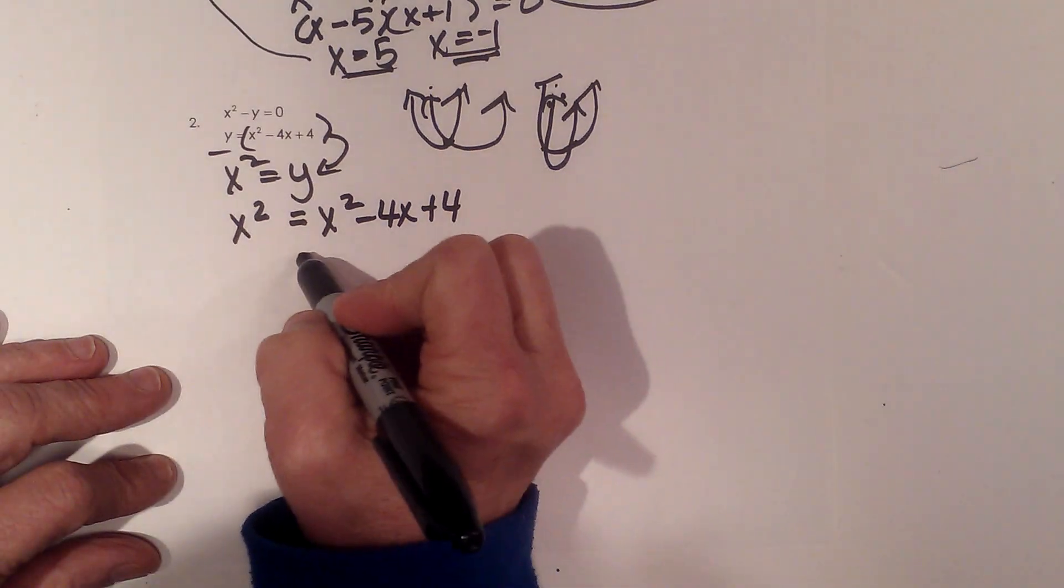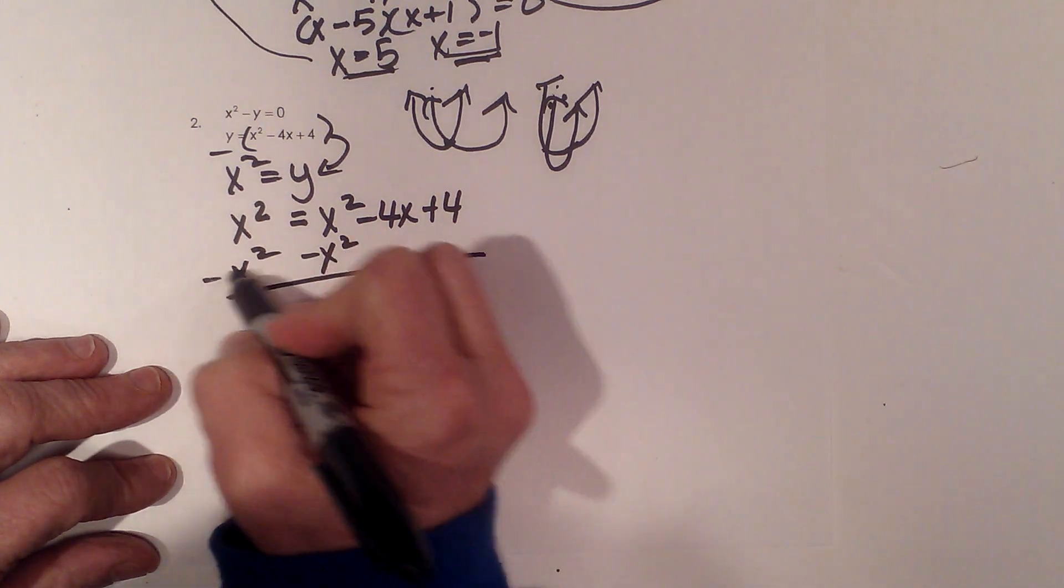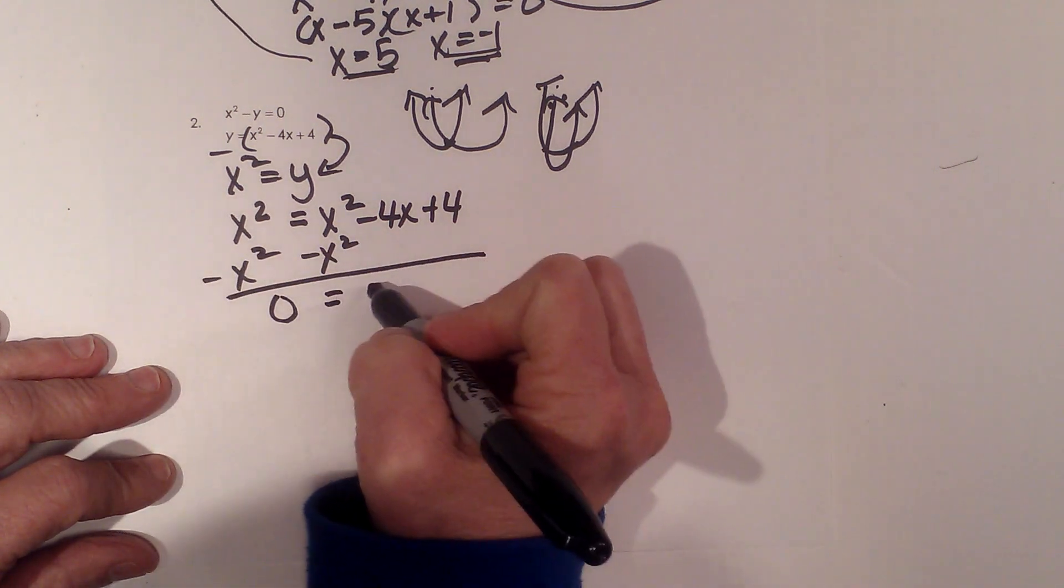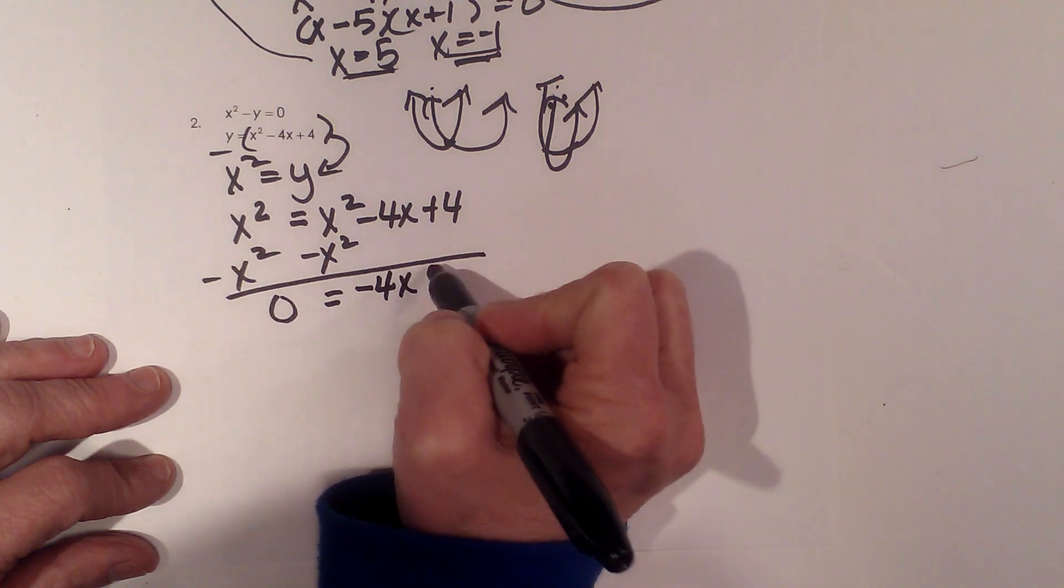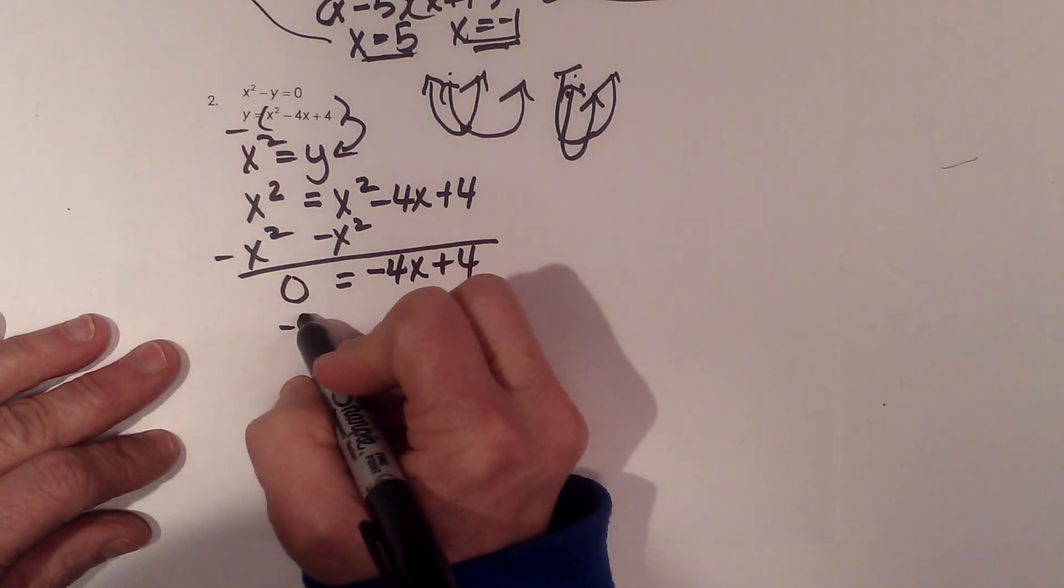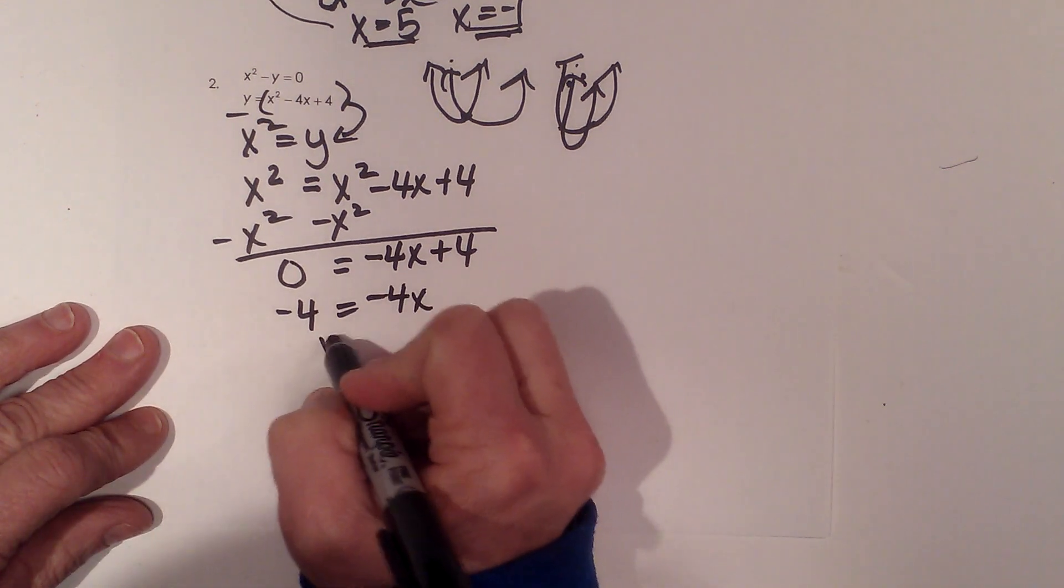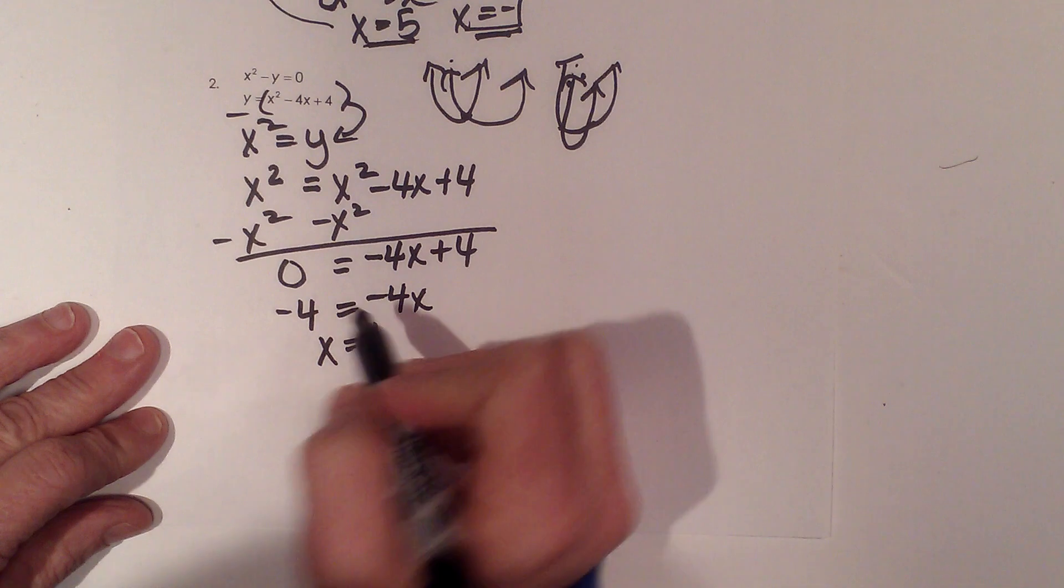Now I'm going to move my x² to the other side. I get 0 when I do that. So 0 = -4x + 4. Let's solve this one. -4 = -4x, so x = 1.